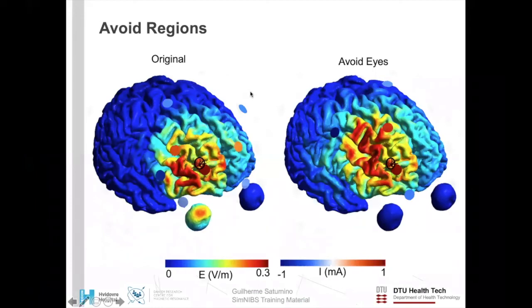SimNIBS also lets you define special positions to be avoided. Suppose you're optimizing a TACS montage to obtain electric fields in a frontal target. However, this optimized electric field has a large electric field here in the eyeballs and you don't want that because it might induce phosphenes. SimNIBS allows you to mark the eyes as a special region where fields are to be especially avoided. And when you turn that on, we can see that the simulation results change drastically to really avoid the electric field in the eyes.